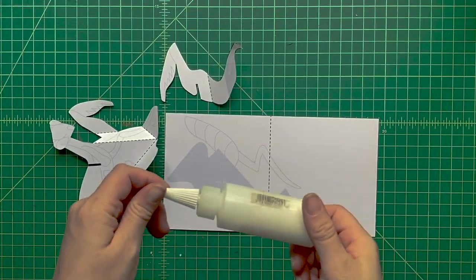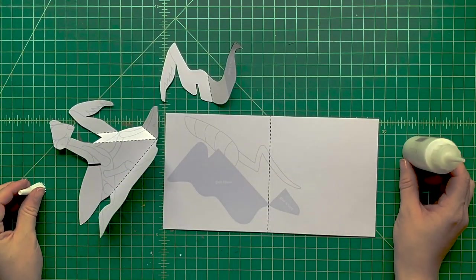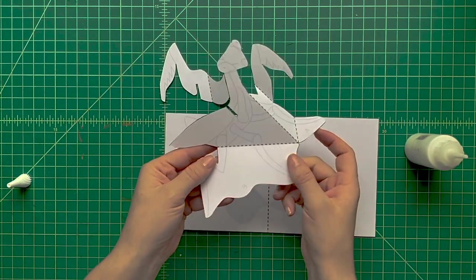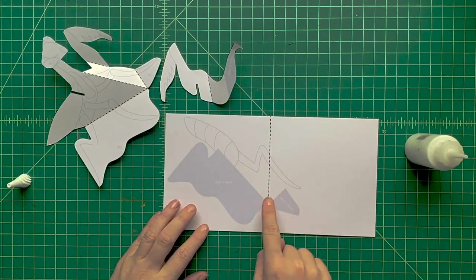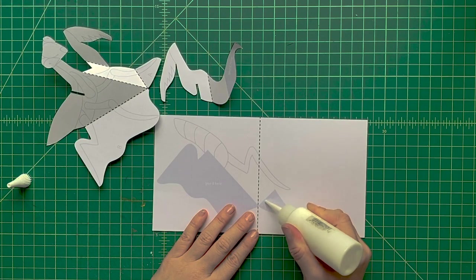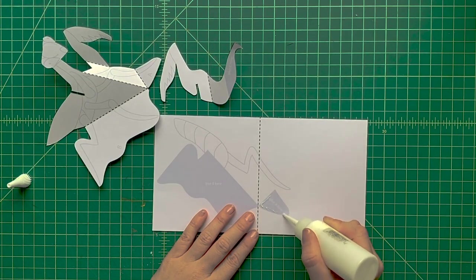Now we're ready to assemble. We're going to use some white glue, just regular Elmer's glue or craft glue, whatever you have available. See these large tabs? They're shaped to match areas on the base page, and that's where we're going to stick them.